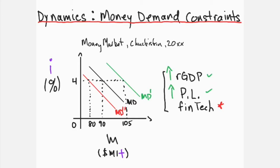Third, as alternate mediums of exchange become available, less money in hand is required. Mobile pay applications and services decrease the demand for money, causing less to be demanded at all interest rates, because they facilitate the transfer of money from one actor to another without the physical presence of the actor or the money. Effectively, technology increases the cost of holding physical money.